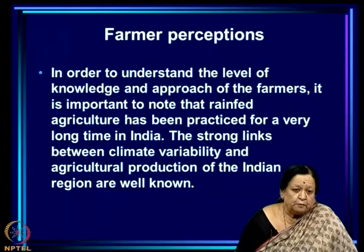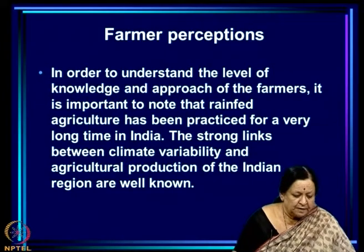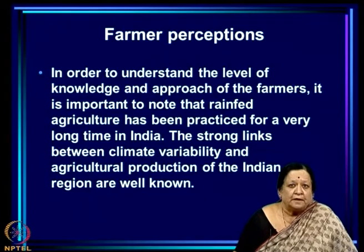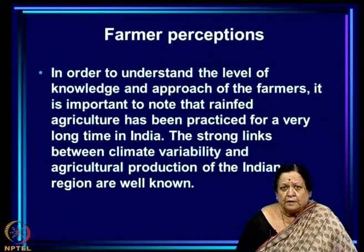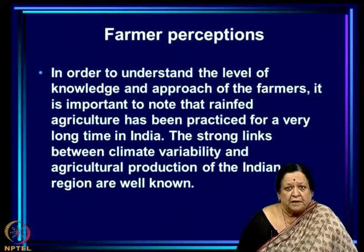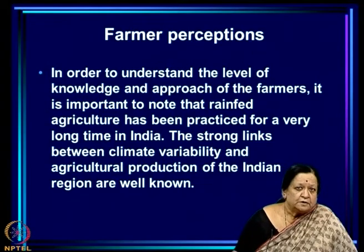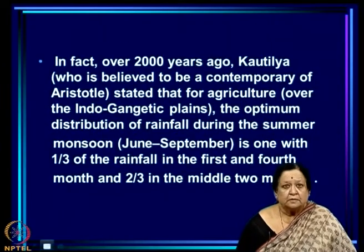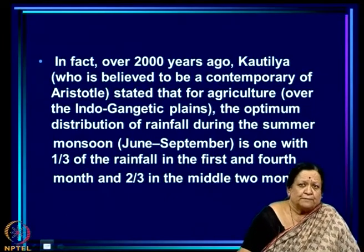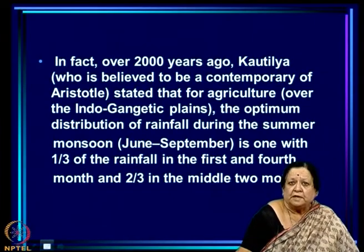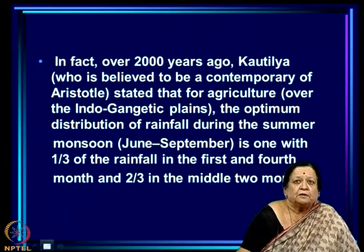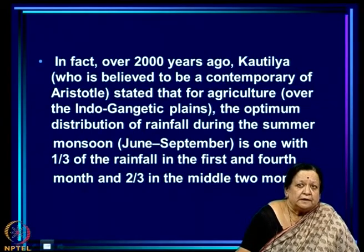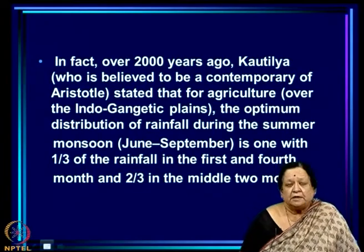Many people doubt how much farmers actually know. To understand their level of knowledge, it is important to note that rain-fed agriculture has been practiced for a very long time in India. The strong links between climate variability and agricultural production are well known. Over two thousand years ago, Kautilya — believed to be a contemporary of Aristotle and the author of the Arthashastra — stated that for agriculture in the Indo-Gangetic plains the optimum distribution of rainfall during the summer monsoon (June to September) is one-third in the first and fourth months and two-thirds in the middle two months.